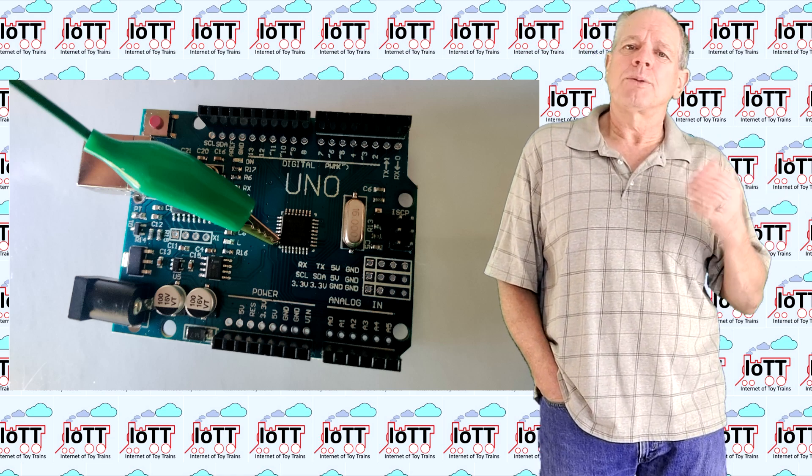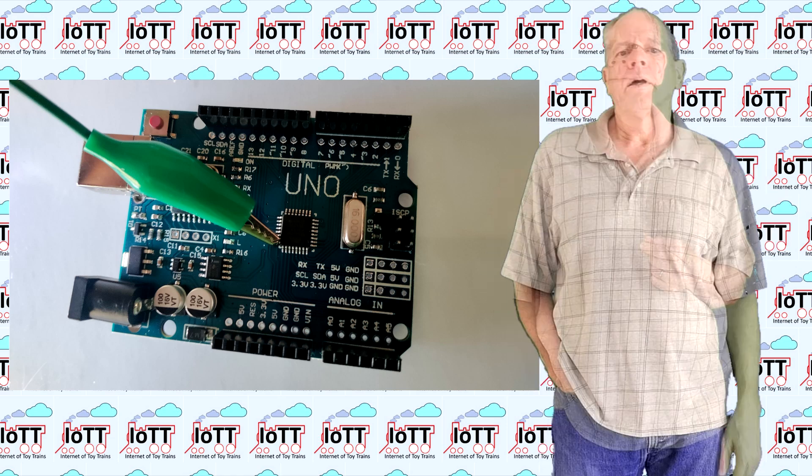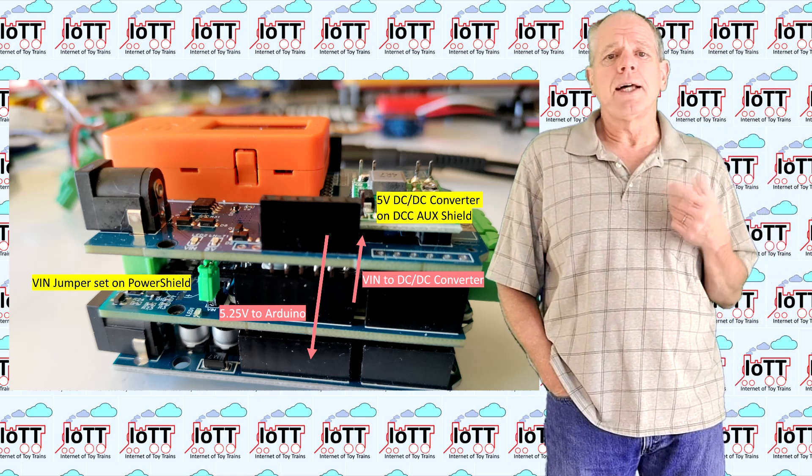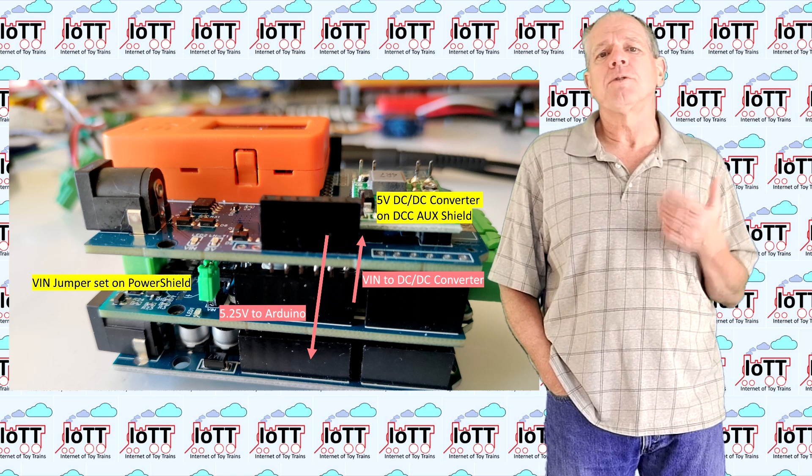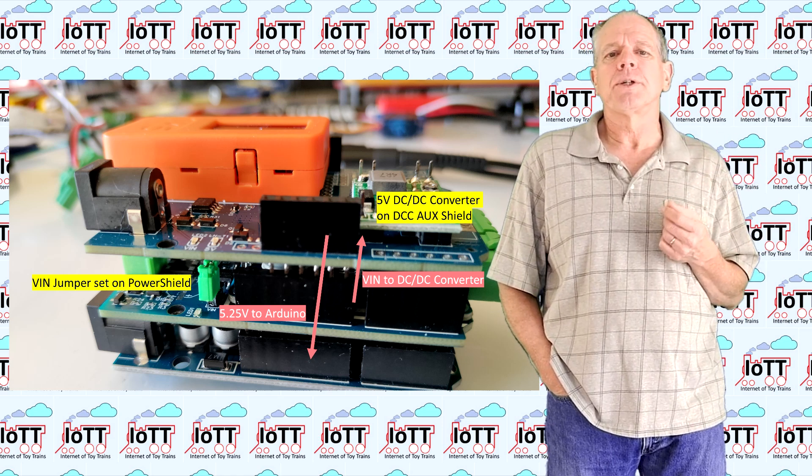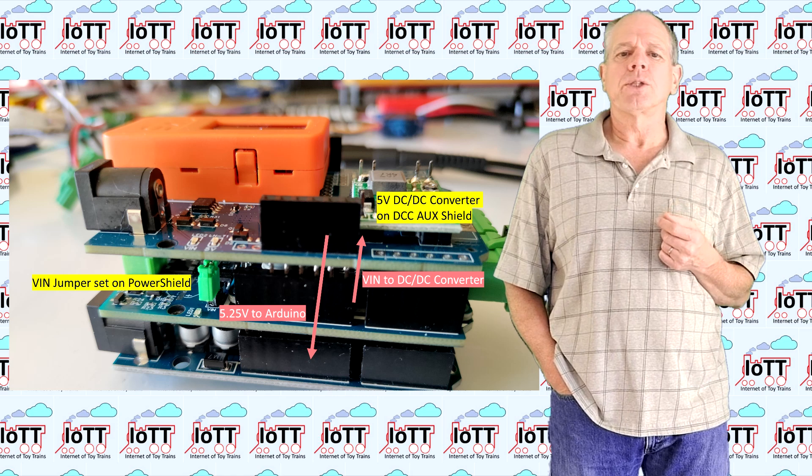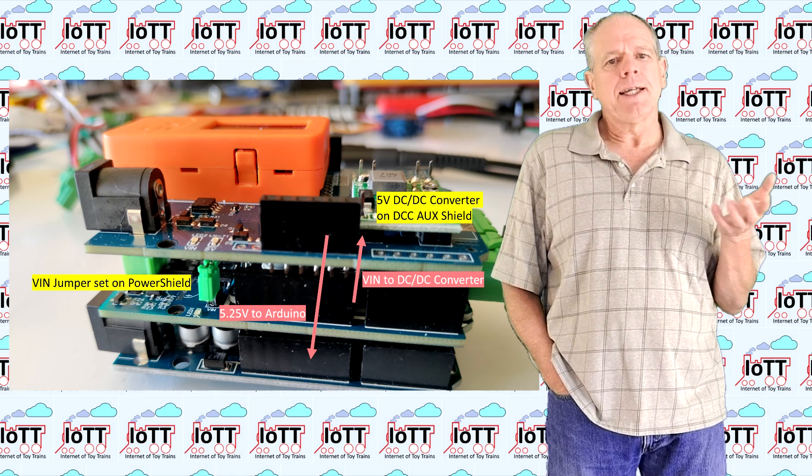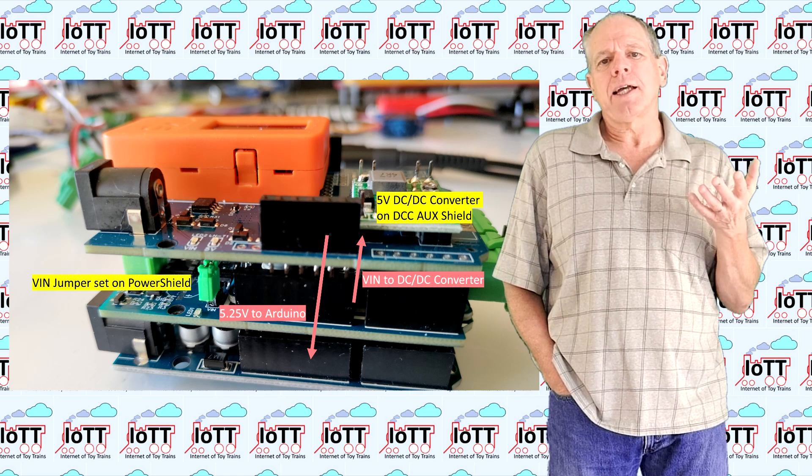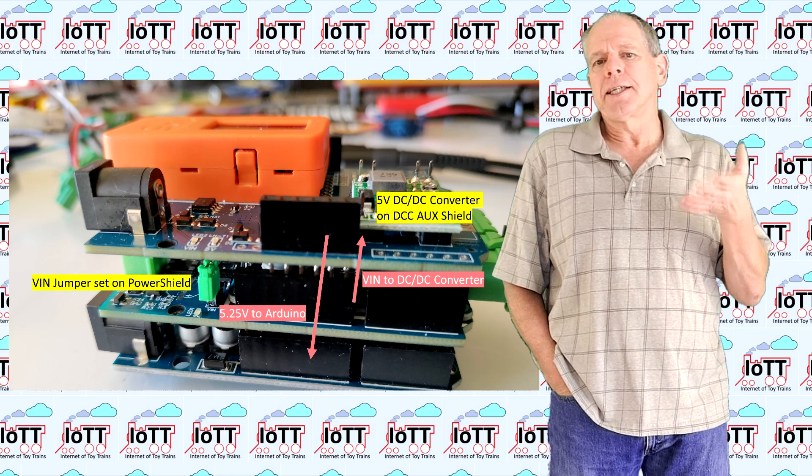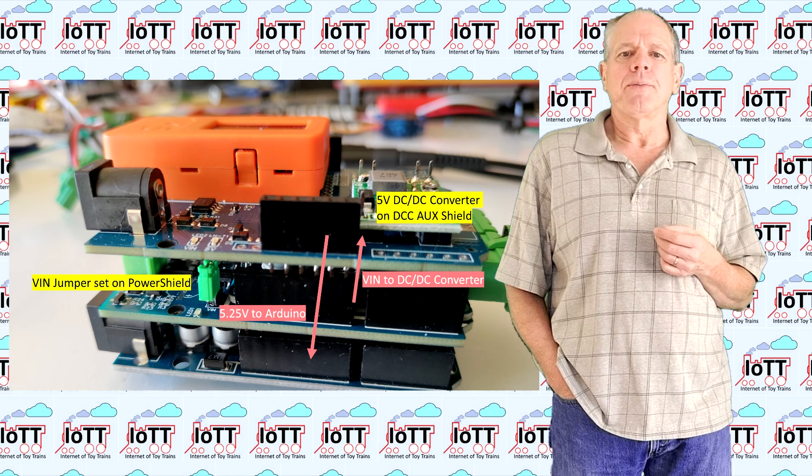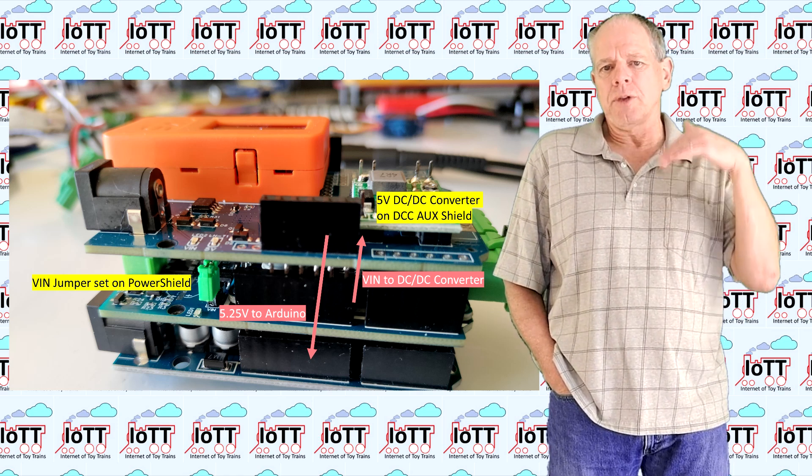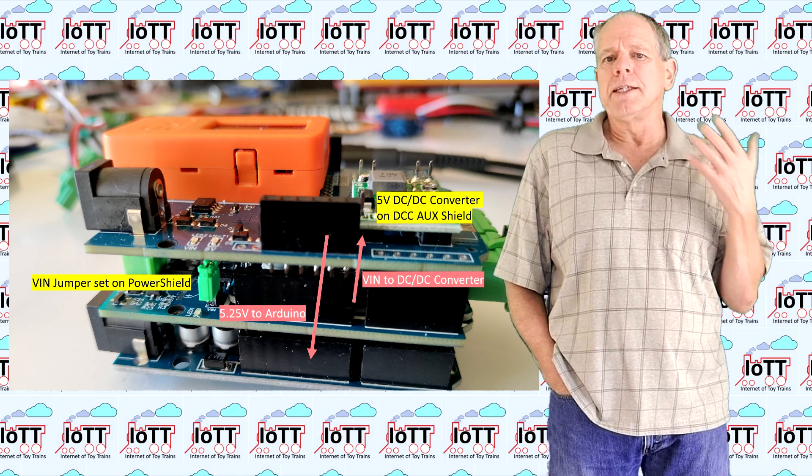Kill number 5 was a user error as well, but more interesting as it shows the effectiveness of using a DC DC converter to power the Arduino stack. Here is what happened. To simplify testing, I powered the stack from a power shield sitting directly on the Arduino. The DCC AUX shield on the other hand was on top of the stack, so it is easy to access.